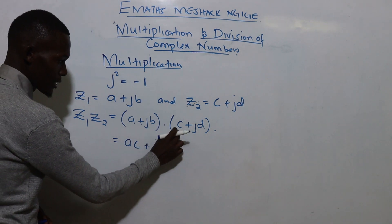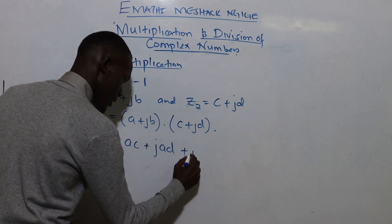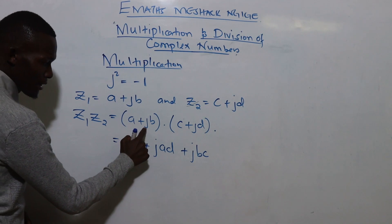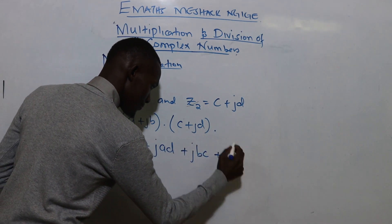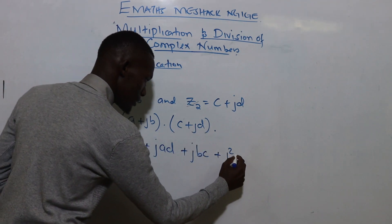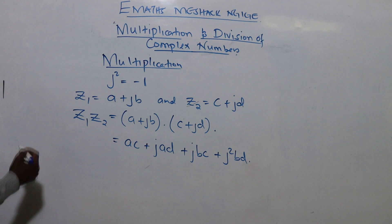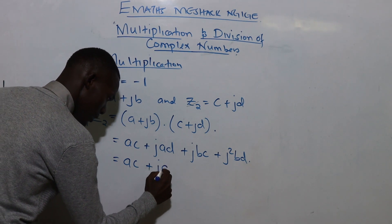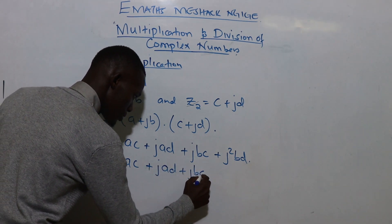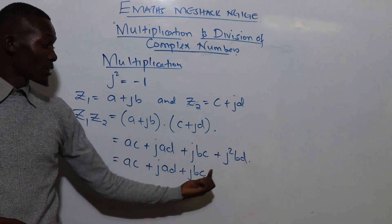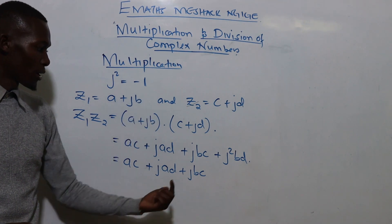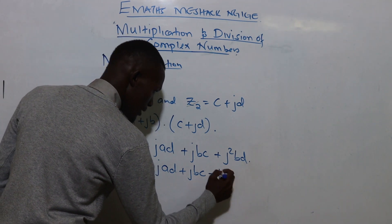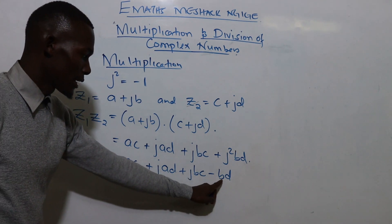The second term jb also opens the bracket: jb times c gives us jbc, then jb times jd gives us j squared·bd. Simplifying further, we have ac plus jad plus jbc, and since j squared equals negative one, the j²·bd term becomes negative bd.